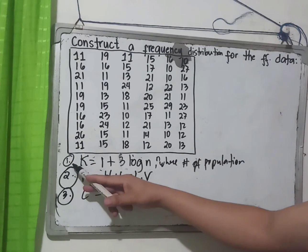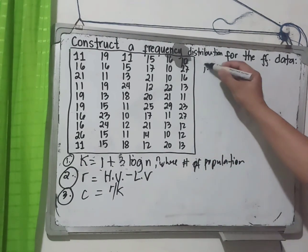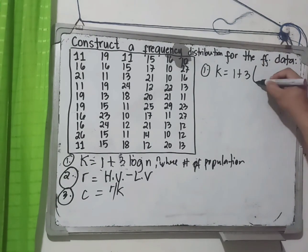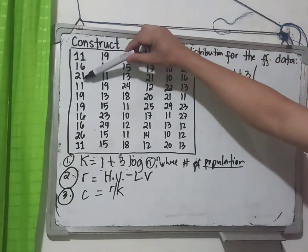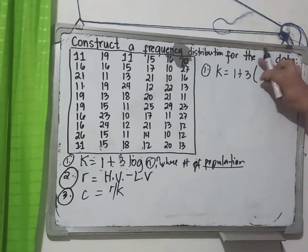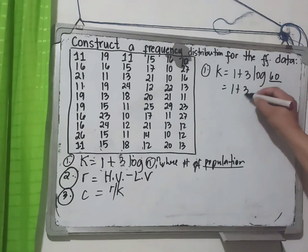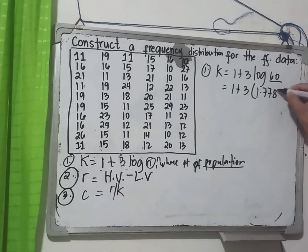Step number one: find the value of k using 1 plus 3 log n. We need to count the number of population n. Counting all values: 1, 2, 3... 6 times 10 equals 60, so n equals 60. Therefore k equals 1 plus 3 times log 60.